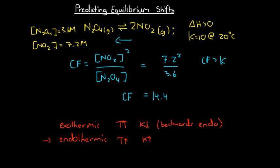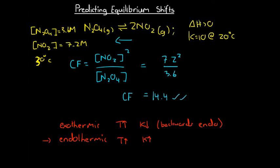Here we assumed we're at 20°C. However, if we heat things up to 30°C, can we figure out which way the reaction is occurring? Changing the temperature doesn't change our concentration fraction — it remains 14.4. However, we can no longer be certain that the concentration fraction is greater than K, because this is an endothermic reaction and we've increased temperature, so our K value will increase — it is no longer 10, it's now more than 10.